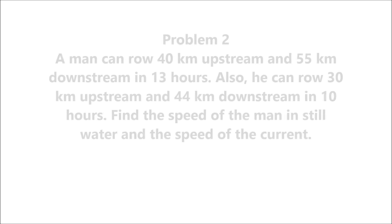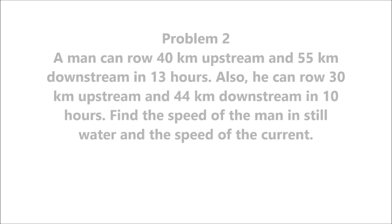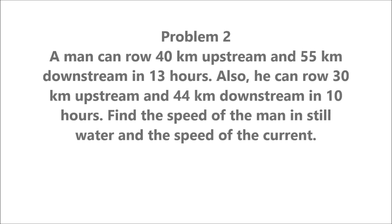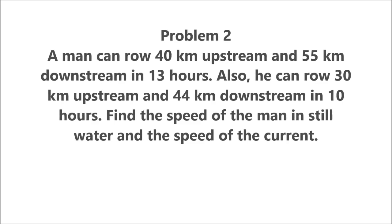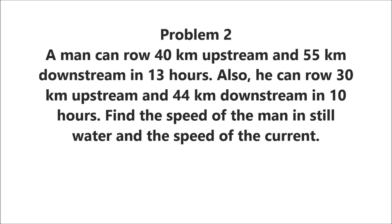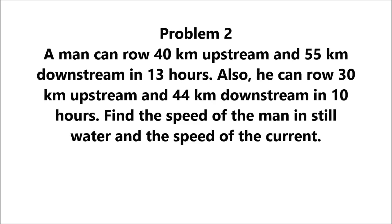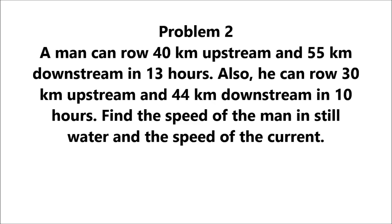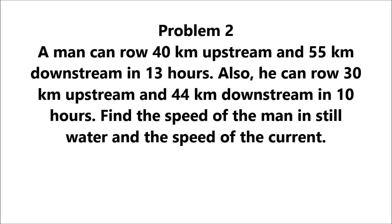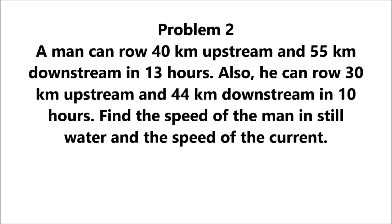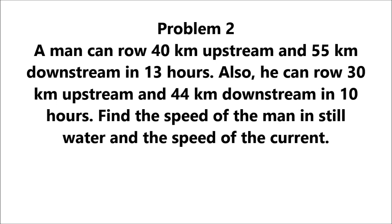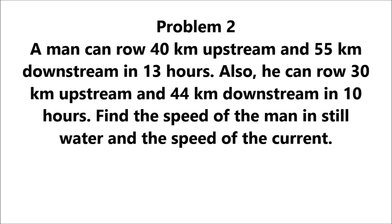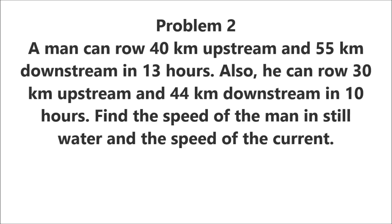Problem 2. A man can row 40 kilometers upstream and 55 kilometers downstream in 13 hours. Also, he can row 30 kilometers upstream and 44 kilometers downstream in 10 hours. Find the speed of the man in still water and the speed of the current.